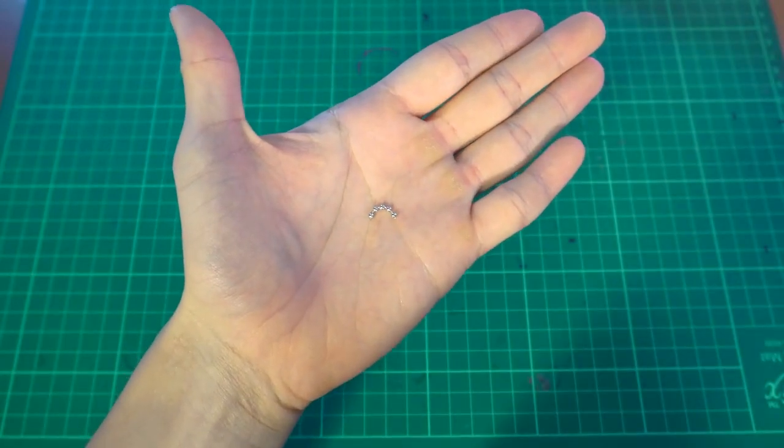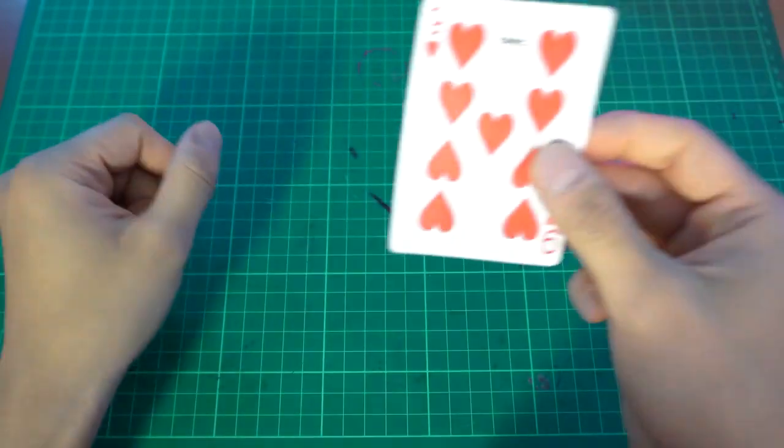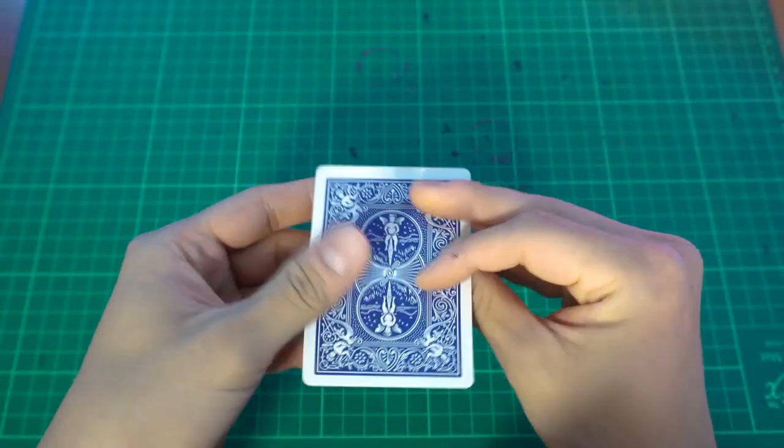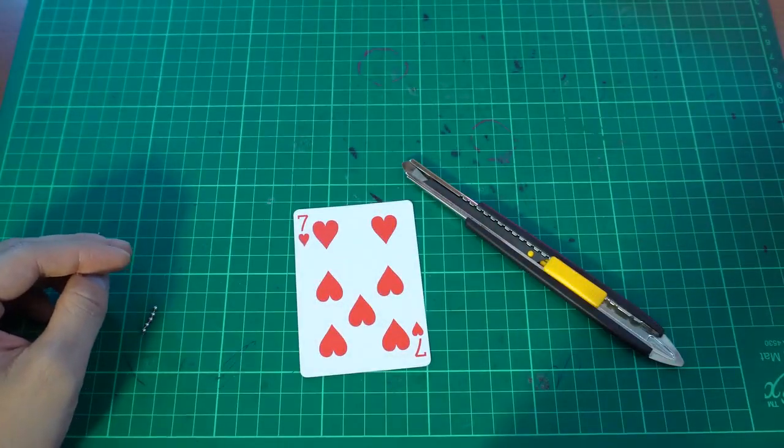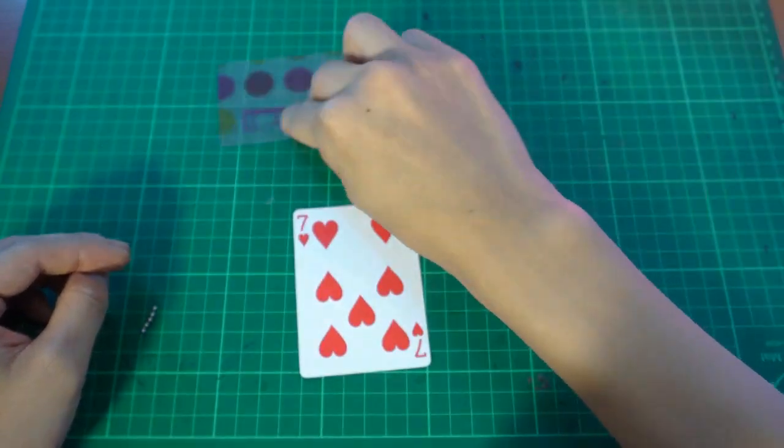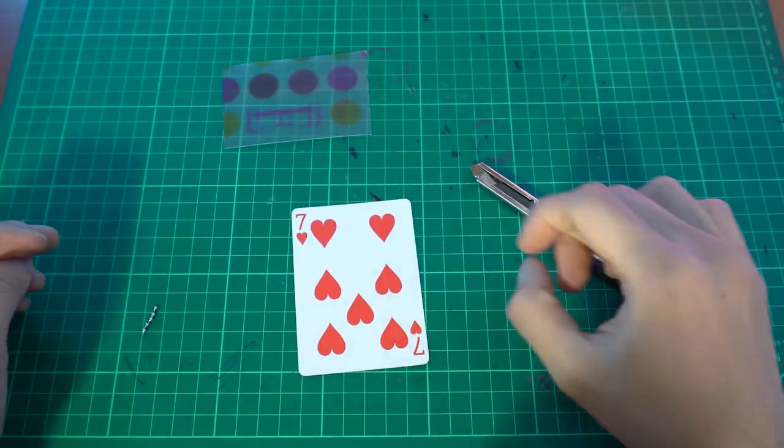Now that you've got this piece, we are going to construct this card. So grab your duplicate card, grab your blade, and your plastic sheet. First, we're going to start by cutting that card.